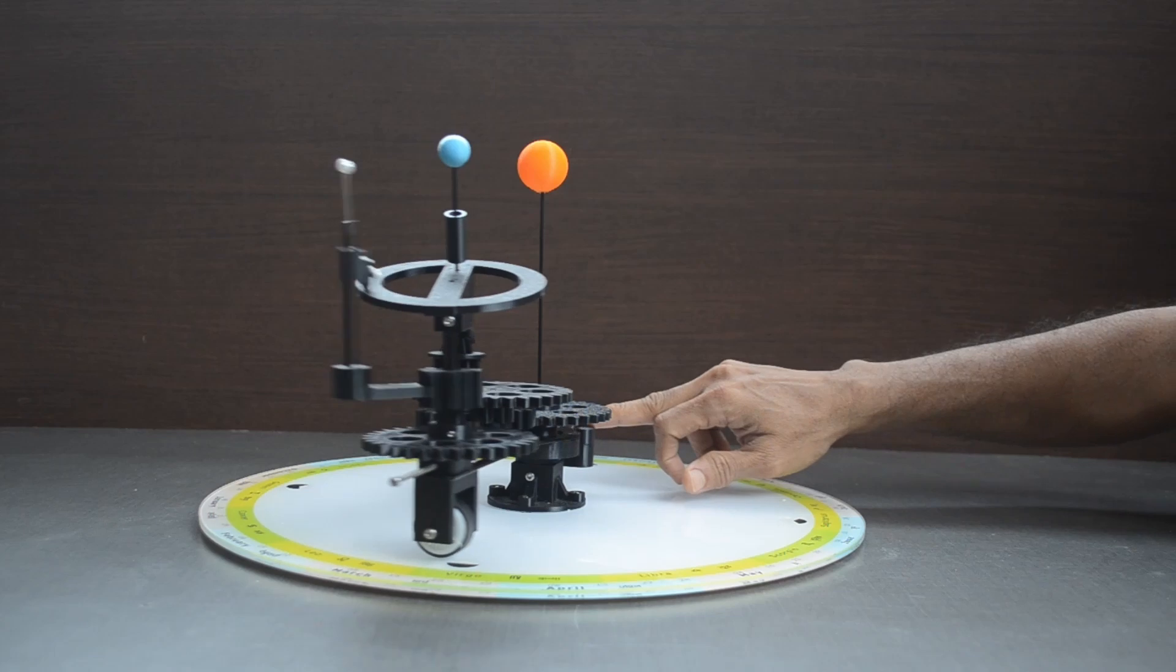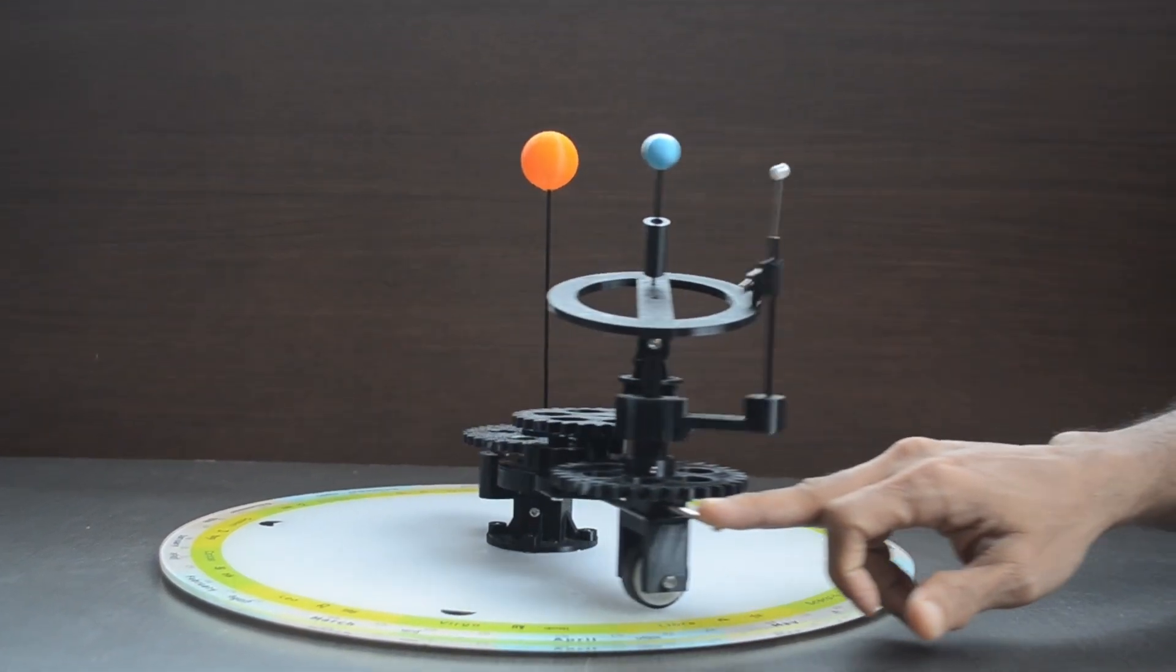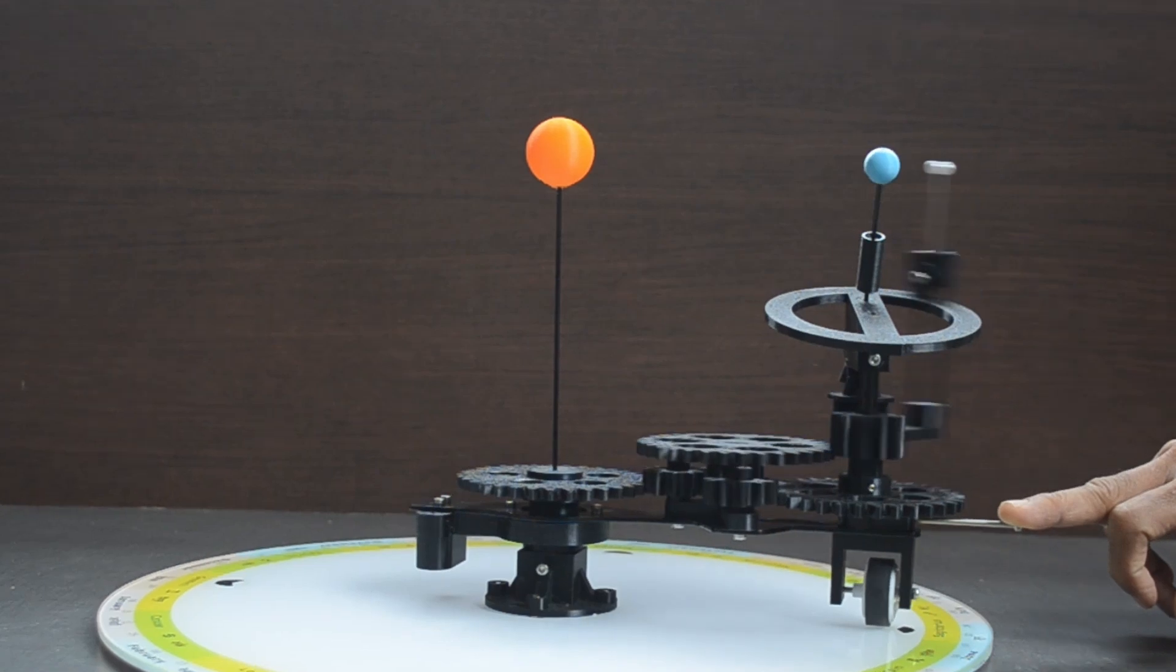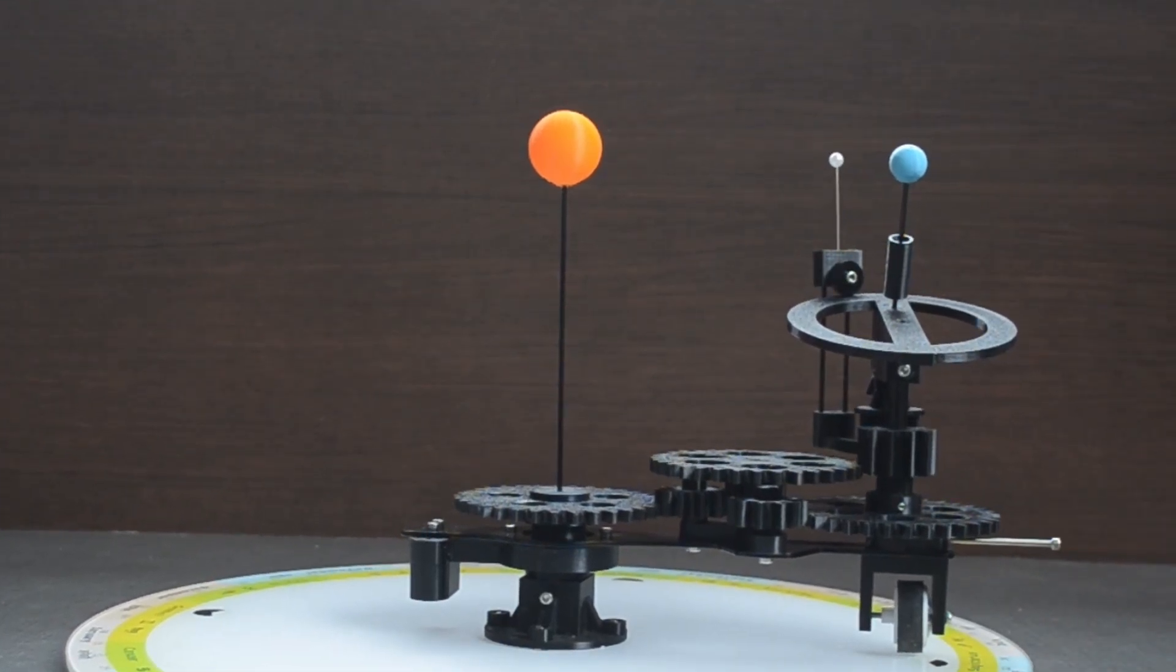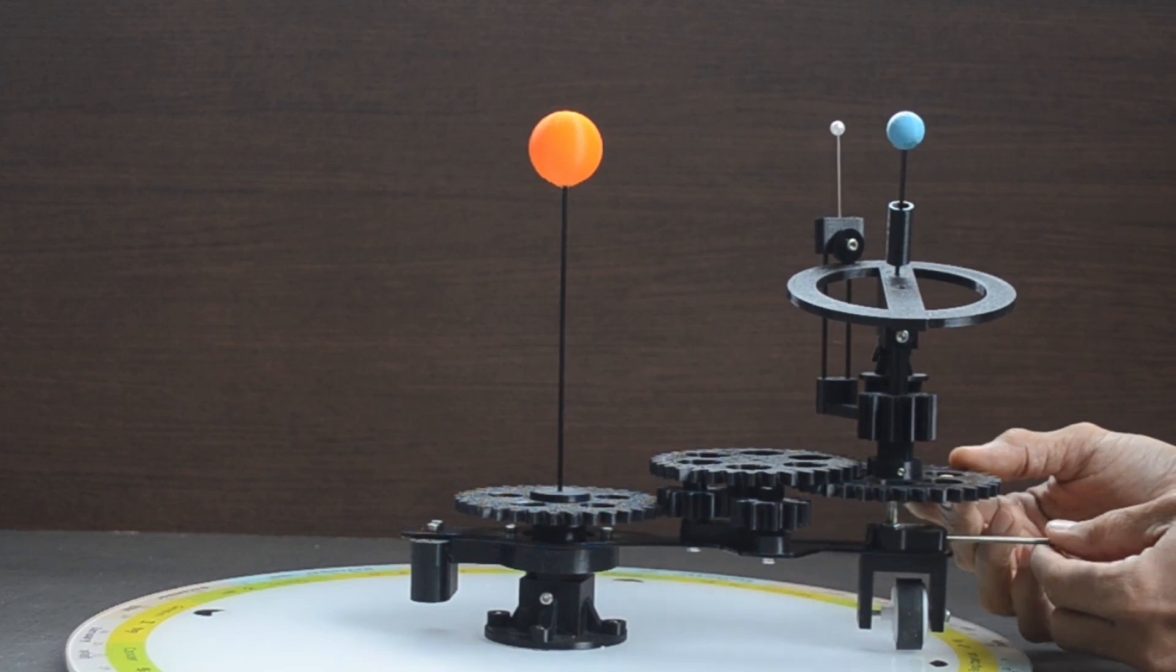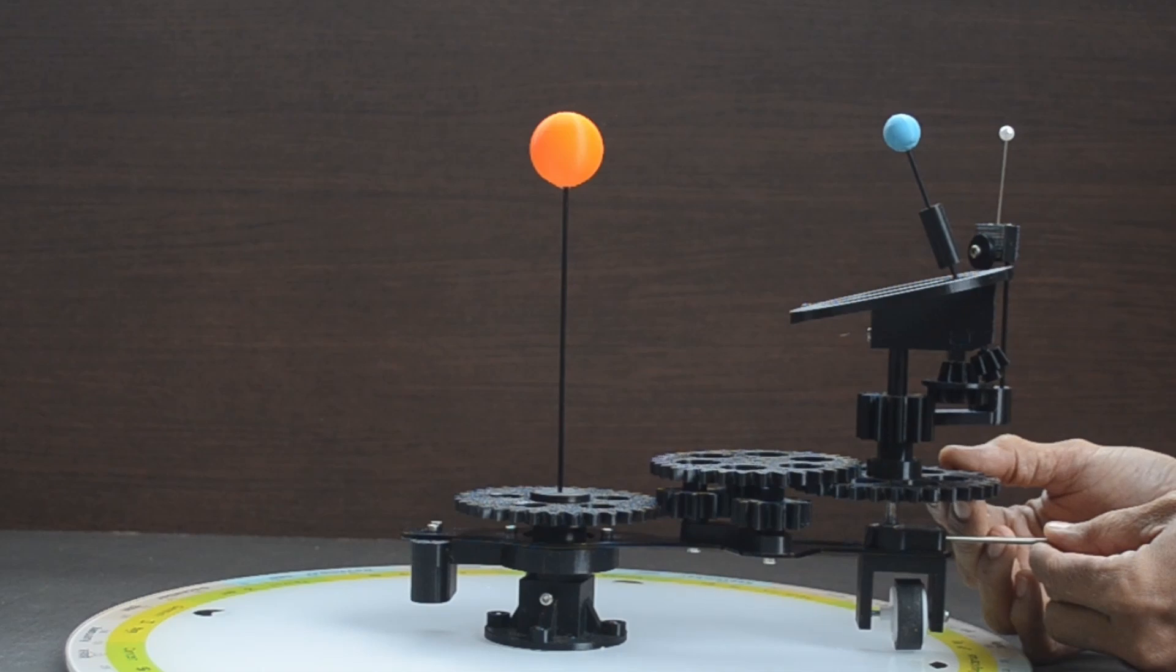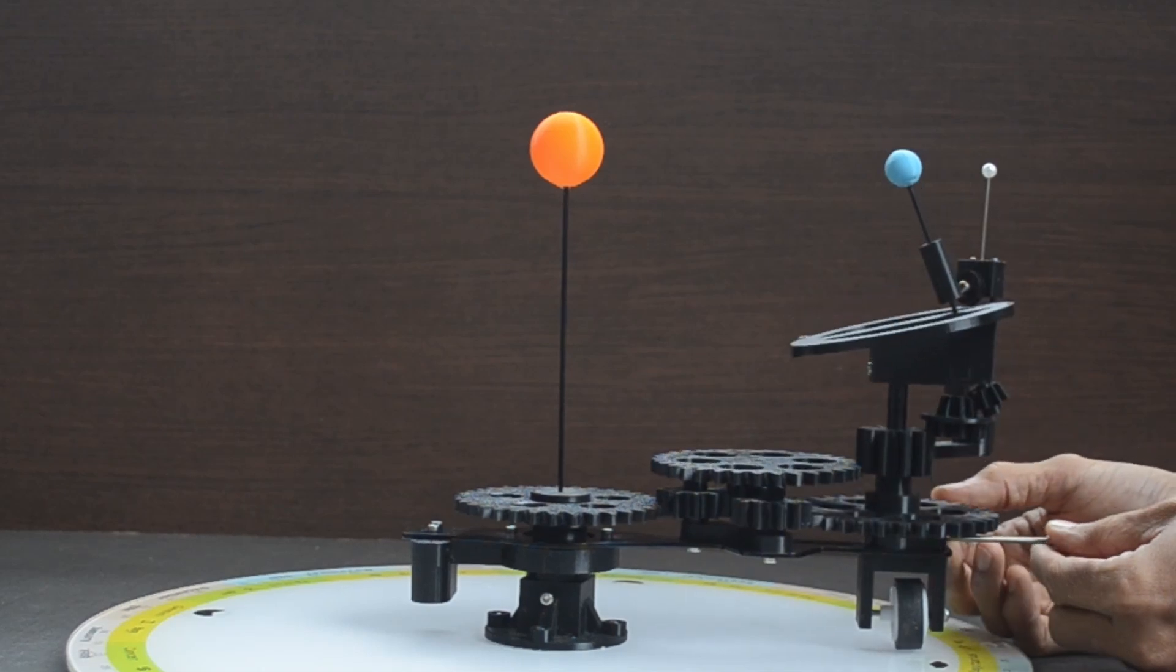In order to explore various events, it is important that the position of the Earth's axis as well as the Moon should be set right. With the handle held in one hand, lift this gear all the way up so that it is not touching other gears. Gently rotate lifted gear to set the position of Earth's axis as required.